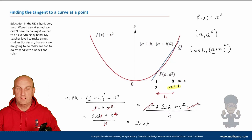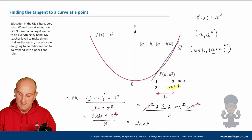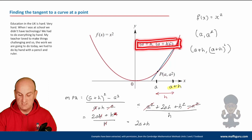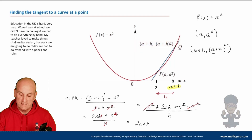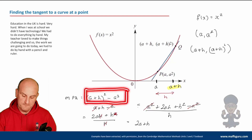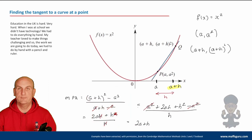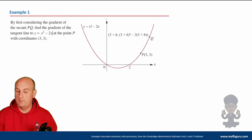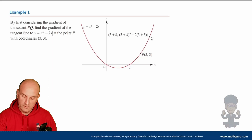This is the process you'll follow over and over. You're given a coordinate, you move a small horizontal distance H to get another coordinate, then you do rise over run. You multiply out the top, simplify, and get something in terms of H. Then we go one step further. Here's another example — it's just about finding the gradient of the tangent line to y = x² - 2x at the point P.